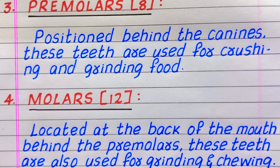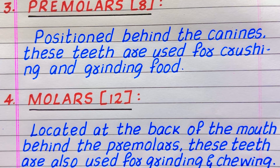The fourth type is molars, 12 in number. Located at the back of the mouth, behind the premolars, these teeth are also used for grinding and chewing food. Thanks for watching. Please do like the video and don't forget to subscribe to my channel.